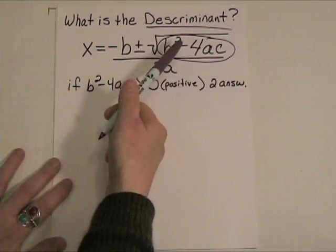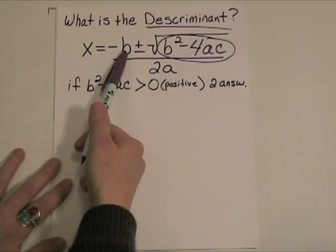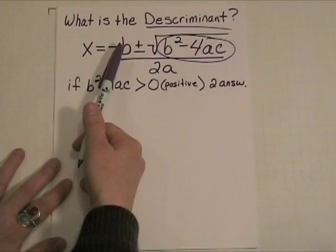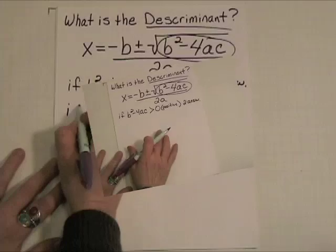And so, if it's possible to take this square root, then we will take the opposite of b and we'll add the square root, and then the opposite of b, and then we'll subtract the square root, divide by 2a, and there'll be two positive.